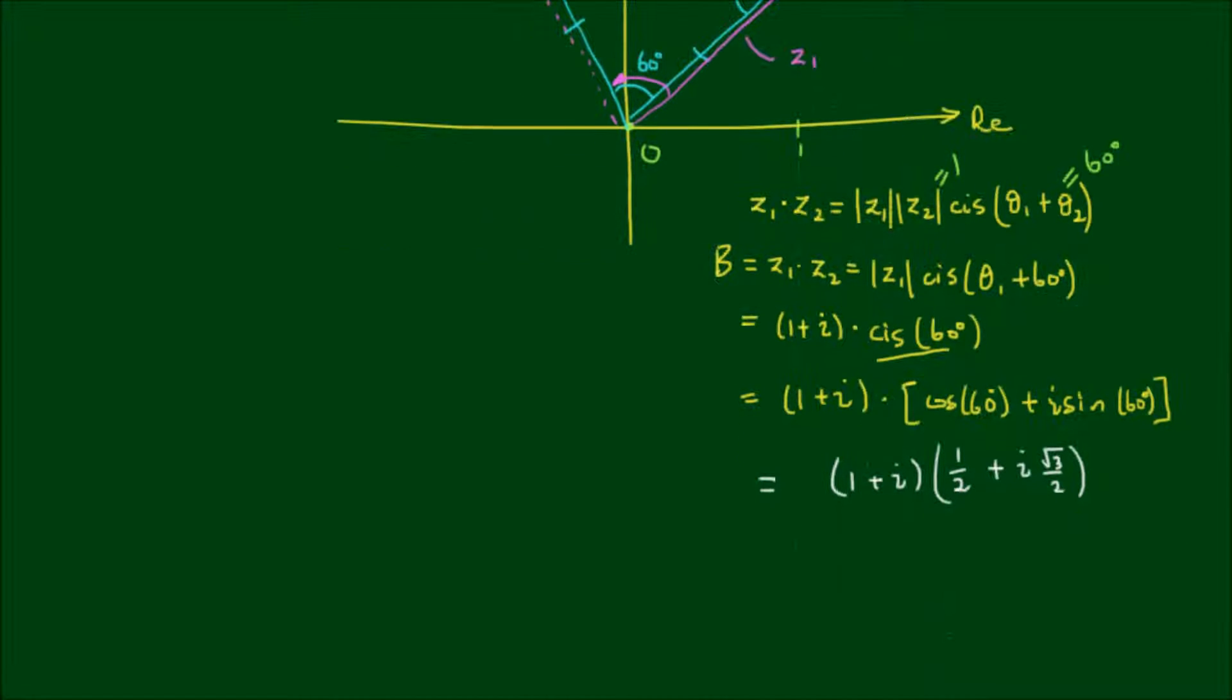So expanding this out, I get 1 half plus i by root 3 on 2 plus i by 1 half plus i squared by root 3 on 2.